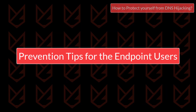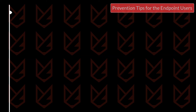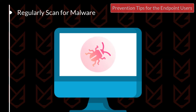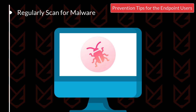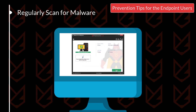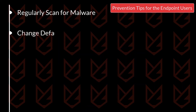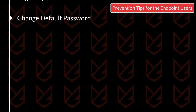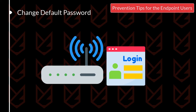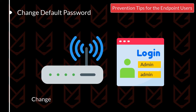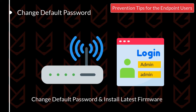Prevention tips for endpoint users: Regularly scan for malware, as hackers use malware to change the DNS settings on your PC — scan regularly with robust anti-malware. Install the latest security updates to your PC and keep all software up to date. Change the default password for your routers, as hackers can easily take over your router if you don't change the default password and install the latest firmware updates.